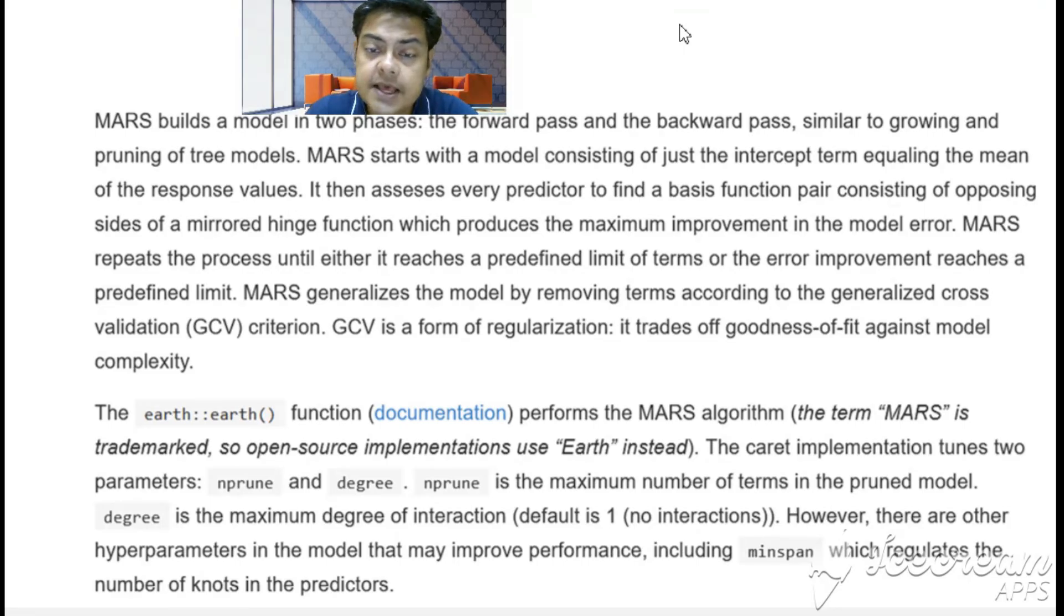MARS starts with a model consisting of just one intercept term equaling the mean of the response values. It then assesses every single predictor to find a basis function pair consisting of opposing sides of a mirror-imaged hinge function—mirrored image means as I showed you, 0 to x minus a and 0 to a minus x, that's why it's called mirrored image hinge function pair. It produces the maximum improvement on the model error. MARS repeats the process until either it reaches a predefined limit of terms or the error improvement reaches a predefined limit.